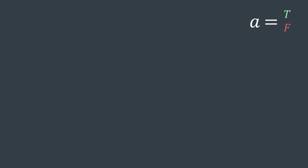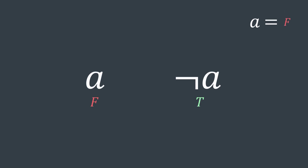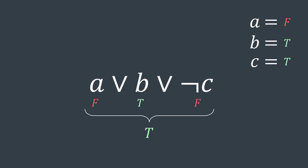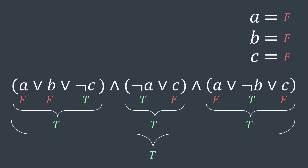This is a boolean variable. It can have the value true or false. These are literals. We can have positive literals and negative literals. This is a clause, a disjunction of literals. Its value is true if at least one of the literals is true. And this is a formula in conjunctive normal form — a conjunction of clauses. Its value is true if all clauses are true. We say that the formula is satisfied.